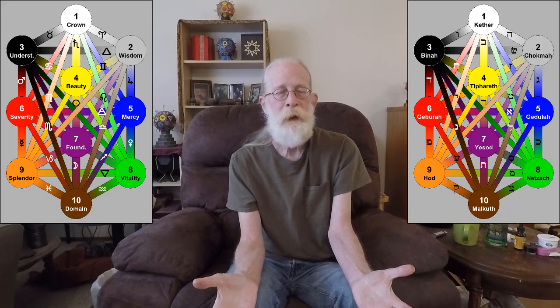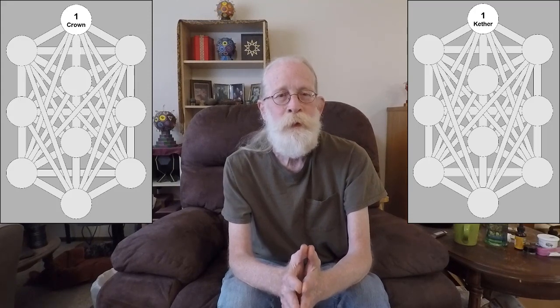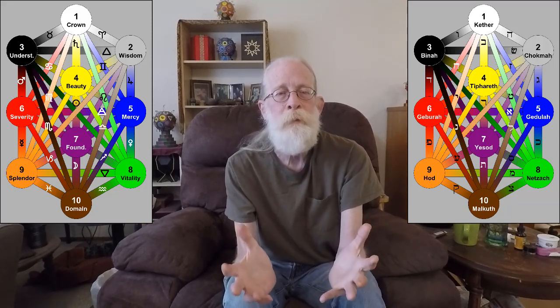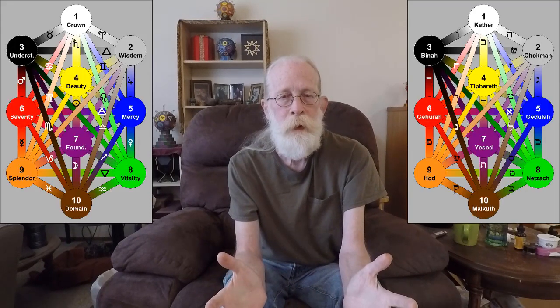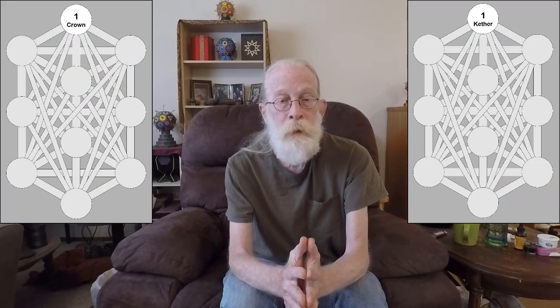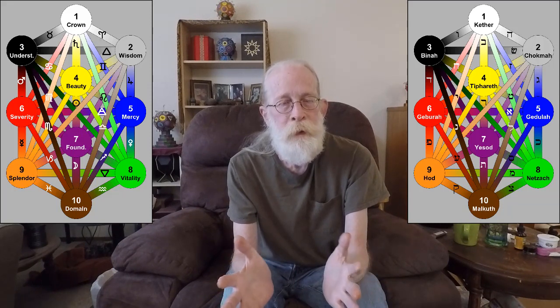We're going to start at the beginning with Kether. Kether. This presents a very different essential meaning than the full Tree of Life symbol. But everything in this symbol is included in Kether. Kether — Crown — contains everything within the symbol; it contains the whole tree. That's all packed into Kether, into this simple symbol. So this symbol and the full Tree of Life symbol are exactly the same thing, just stated differently.